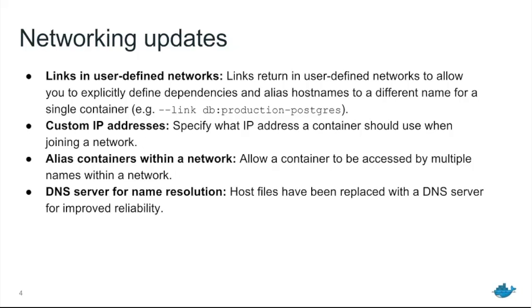So we've added that feature back. You can now use links in user-defined Docker networking networks. Links let you connect one container to another and give it a different name — for example, making a container called production-postgres available with the name db. This also helps with Compose because you can explicitly define what depends on what — Compose knows to start the database before the web server because the web server links to the database.